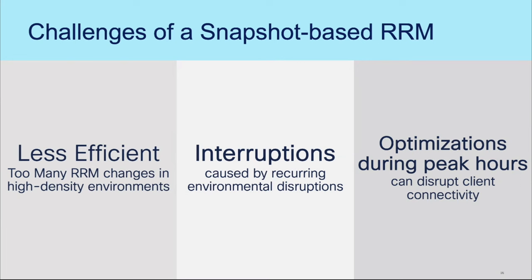How can we make this more efficient? Every time RRM made changes, clients got an impact. The client doesn't know what the new AP environment looks like because the AP changed the channel and the client cannot use prior scanning results. We should not make APs change channels during peak time. Imagine what can happen in critical environments like healthcare and hospitals. Many customers do not want any RRM changes during daytime, but they do it manually. We should avoid that and move on from those legacy manual ways. That's where AI-enhanced RRM came in as a trend-based RRM.